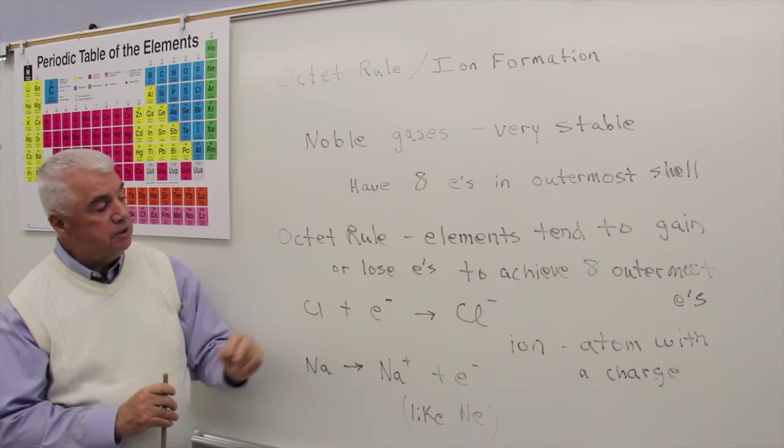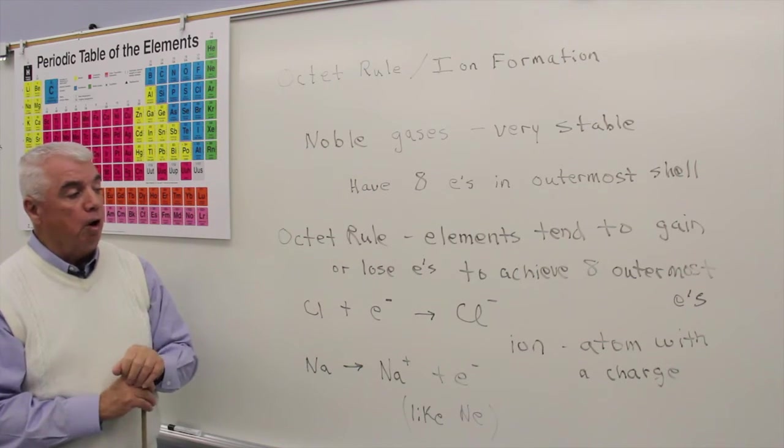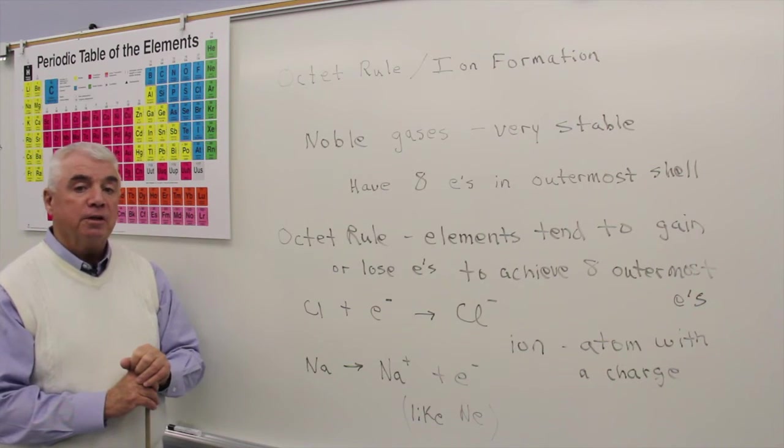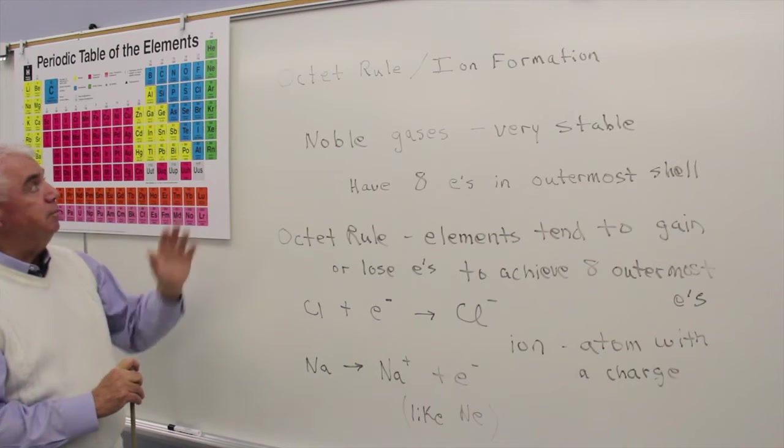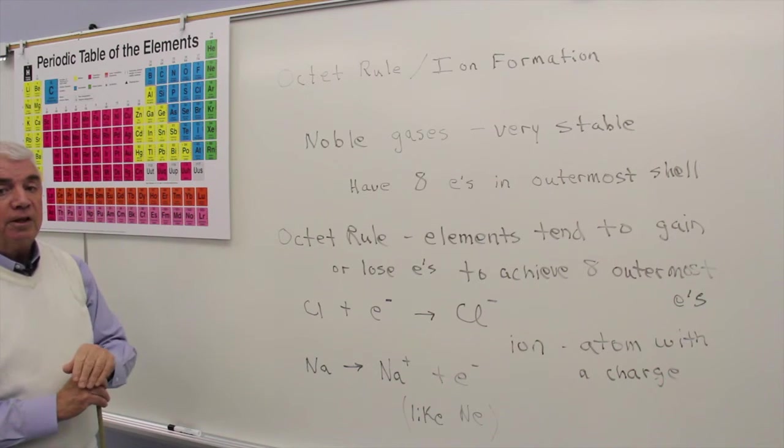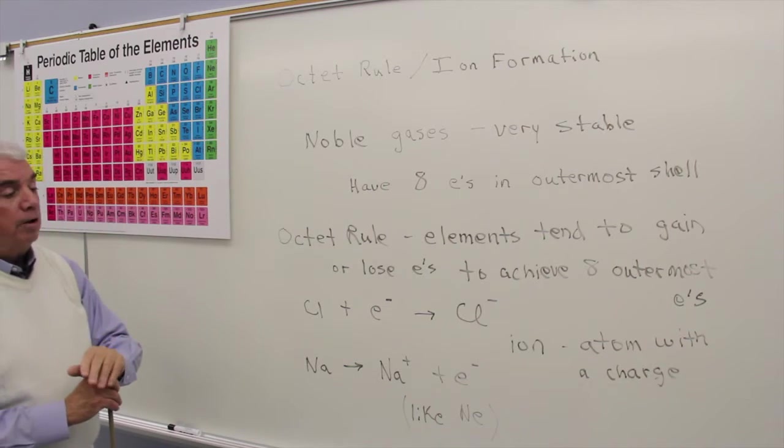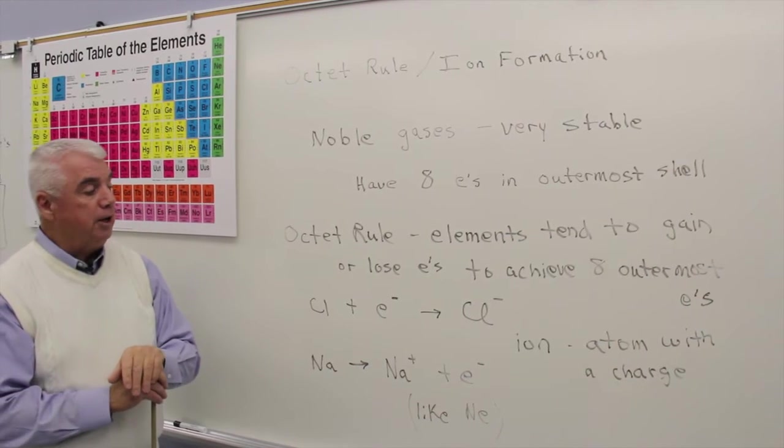We believe that elements tend to gain or lose electrons to achieve eight outermost electrons. In other words, they'd all like to be like the noble gases, and that helps us explain the reactivity of all of the elements up here in the periodic table.